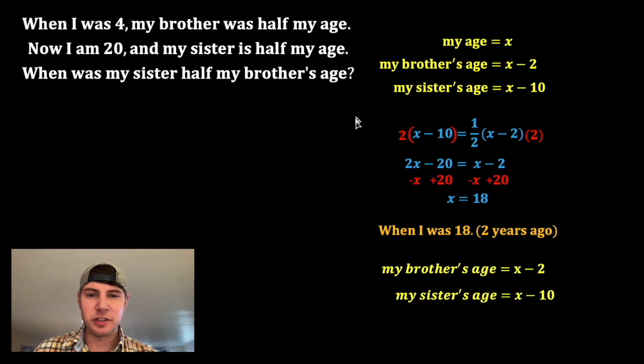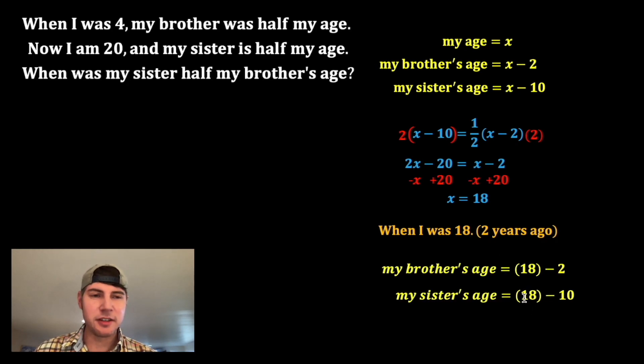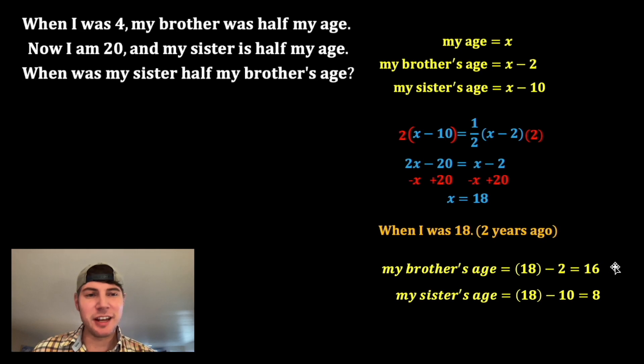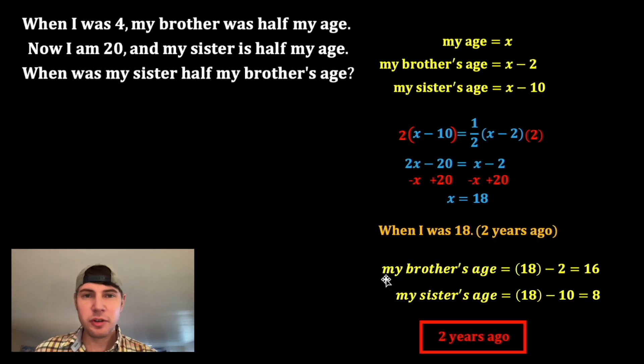Now let's check our work — let's copy these down and plug in 18 for both Xs. My brother's age is 16 and my sister's age is eight. So two years ago, she was half of his age. How exciting!